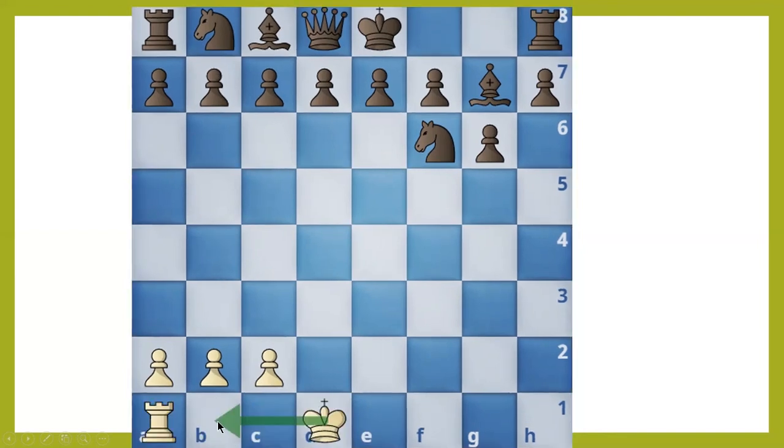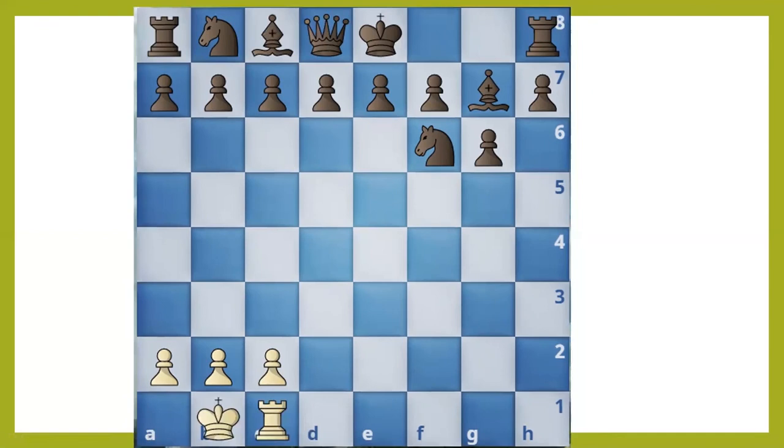Before castling, king is here at E square and rook is present at H square. After castling, king goes to G square and rook moves to F square.